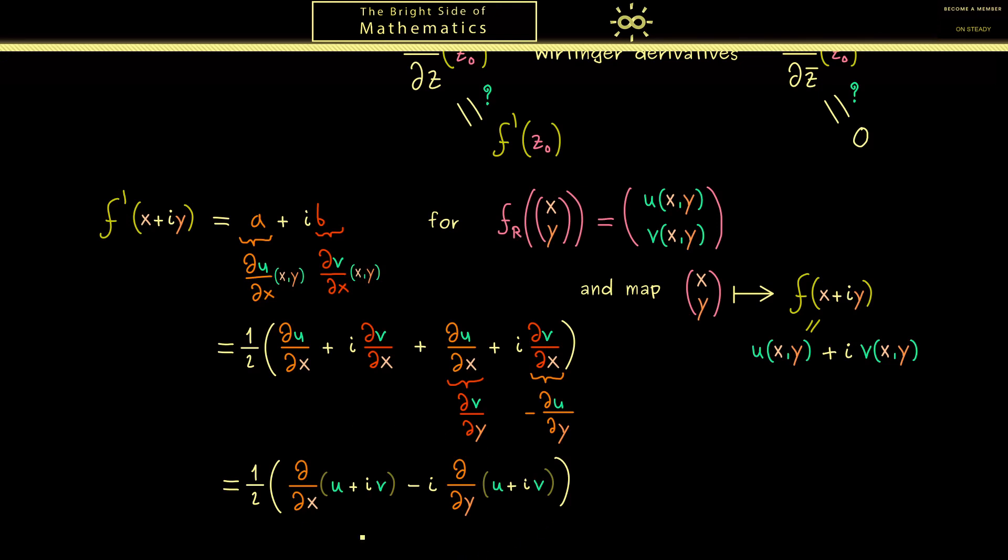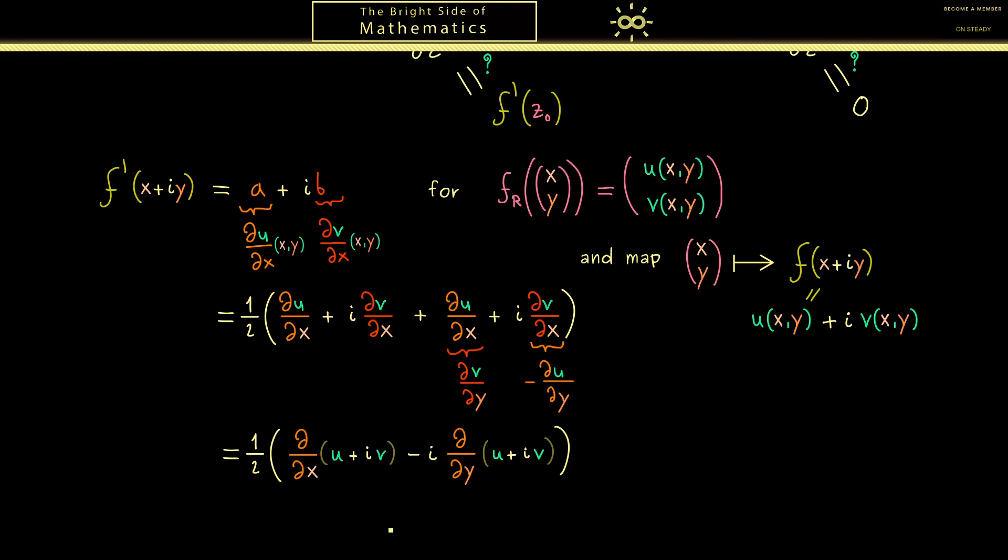So this is the result for f' you really should remember. Indeed it's easier to remember when we use that u plus iv are essentially the function f. Hence we can just define two new differential operators. Namely we just call the first one df/dx and the second one df/dy. And indeed this makes sense. This one is the partial derivative with respect to x when you see f as this map here. Soon I'll show you an example and then these two operations should be clear.